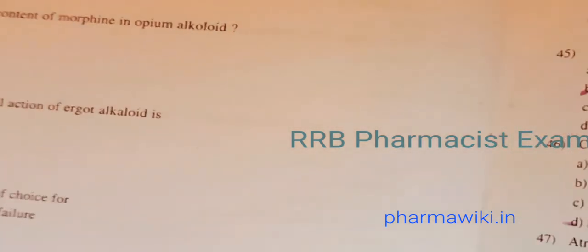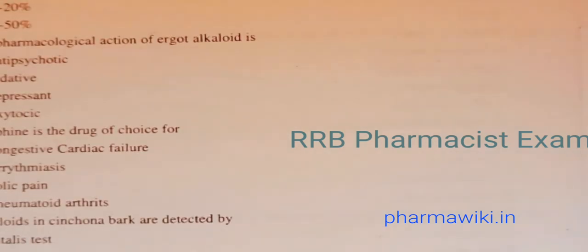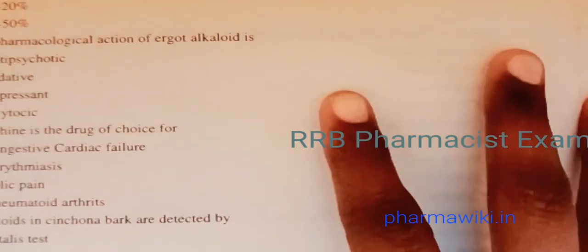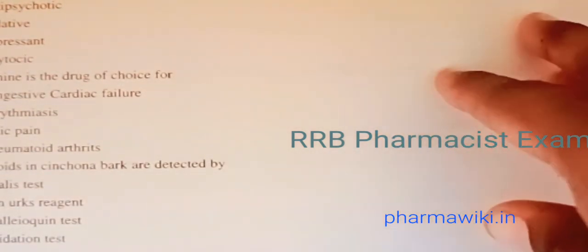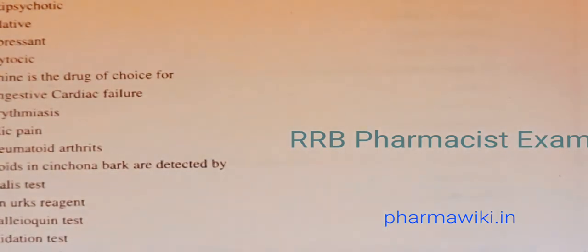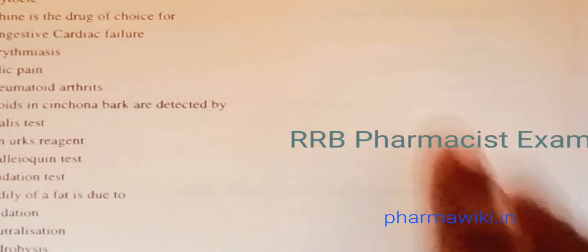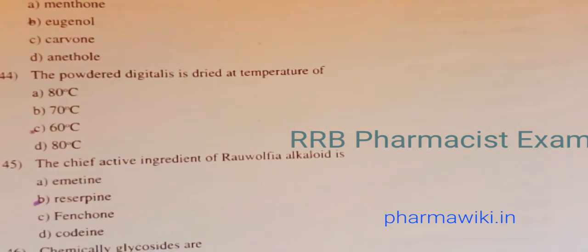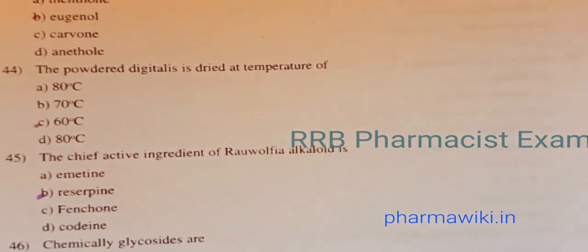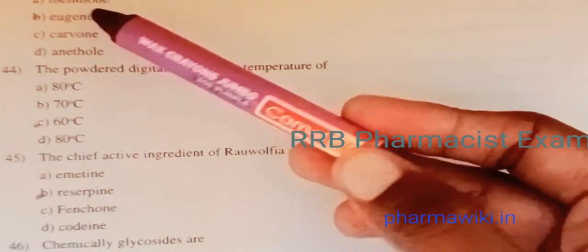Question 41: Alkaloids in cinchona bark are detected by — Vitali's test, Van Urk's reagent, Thalleioquin test, or oxidation test? The answer is C, Thalleioquin test. Question 42: Rancidity of fat is due to its oxidation.